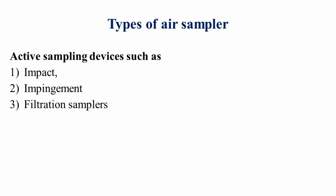Types of air sampler. Active sampling devices are categorized as: first, impaction air sampler; second, impingement air sampler; and third, filtration air sampler.